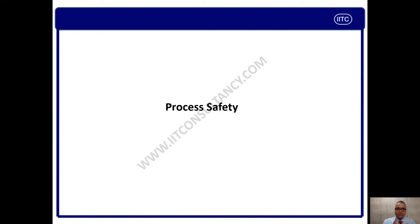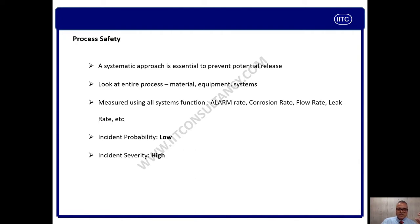Process safety, as the name implies, is the safety of the process. Process safety primarily means prevention of LOPC — loss of primary containment. It is a systematic approach to prevent potential release or LOPC. It covers entire processes beginning from material, equipment, systems, and product. It is measured in different aspects like alarm rate, corrosion rate, flow rate, and leak rate.